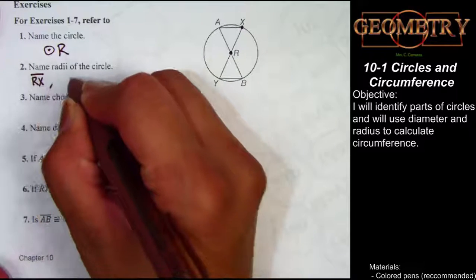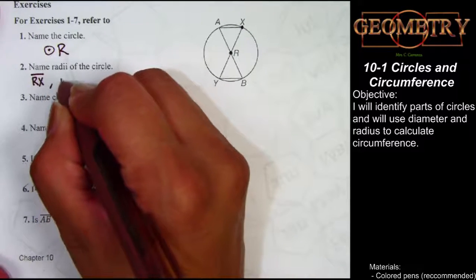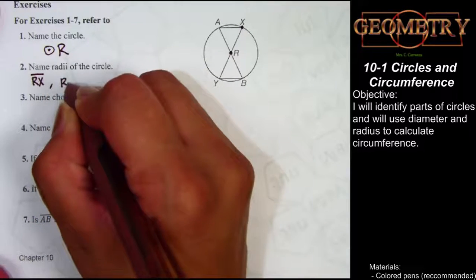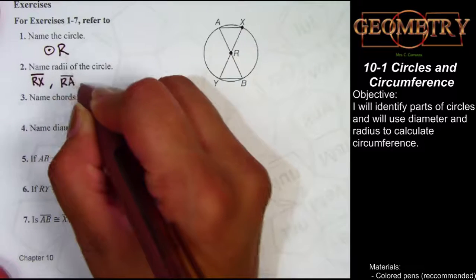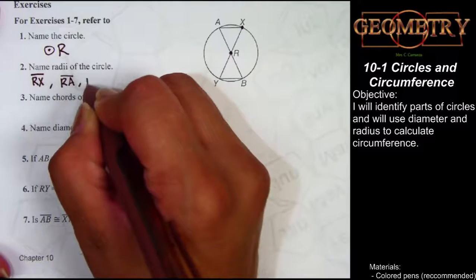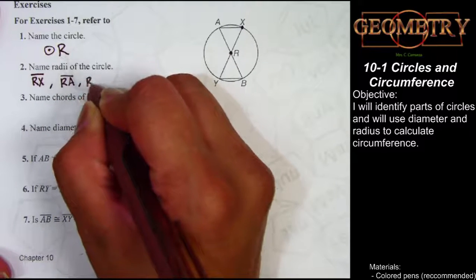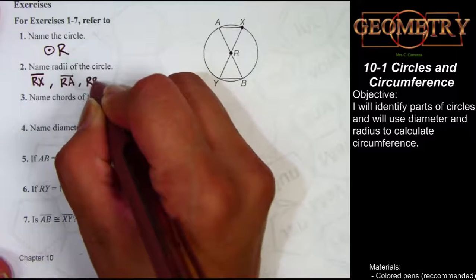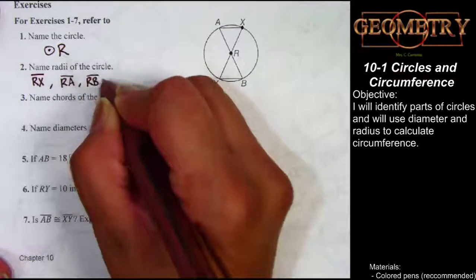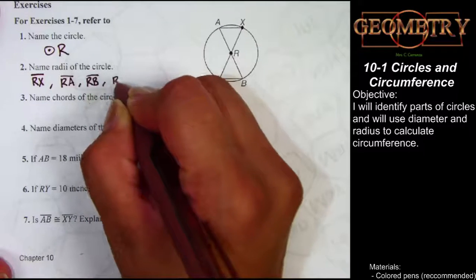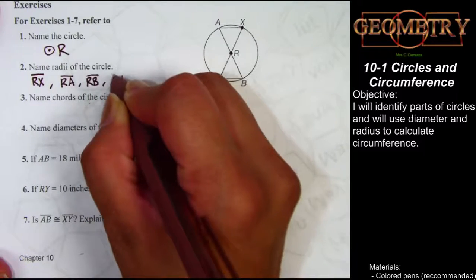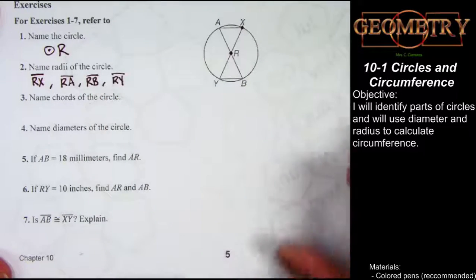Welcome back. Here are the radii of the circle: line segment RA, line segment RB, and line segment RY.